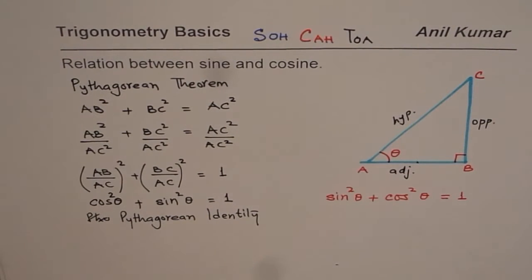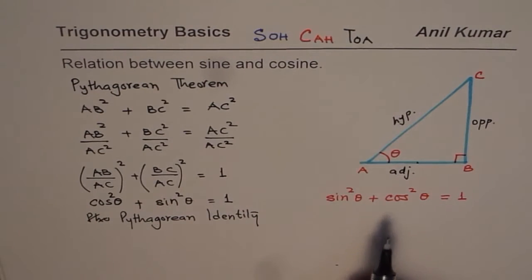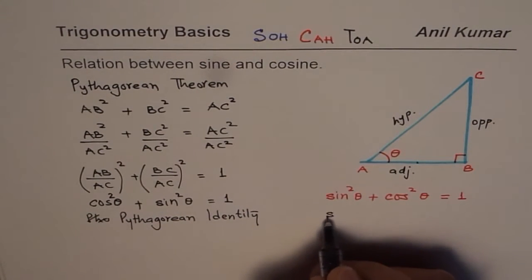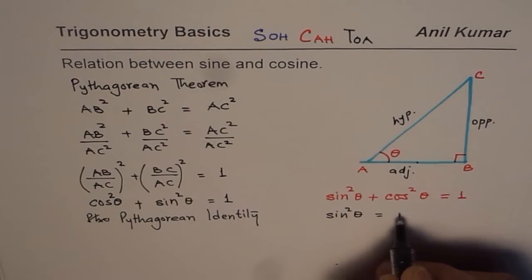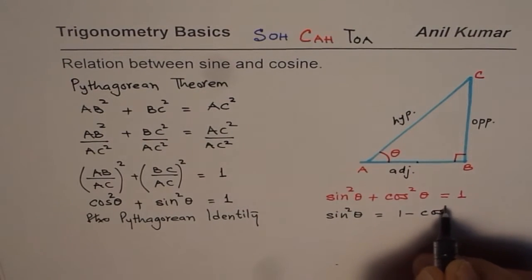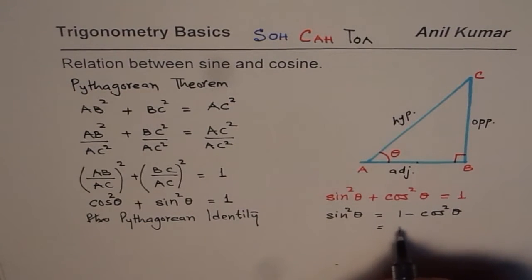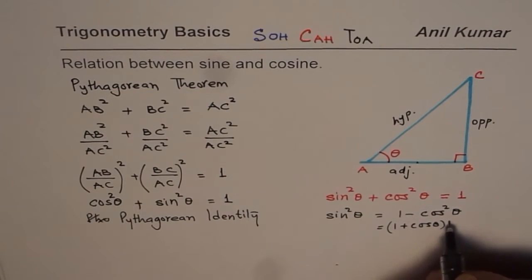Now at times we may use different forms of this identity. We could write sin²θ as equals to 1 minus cos²θ. We could also write this as (1 + cos θ)(1 - cos θ), difference of squares.